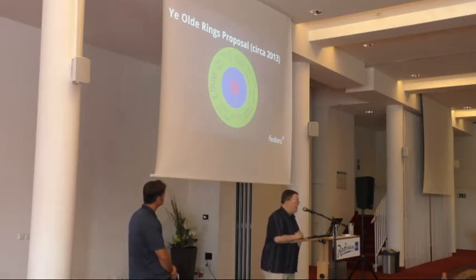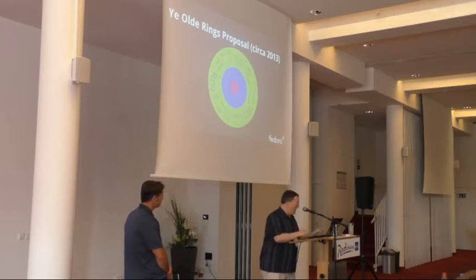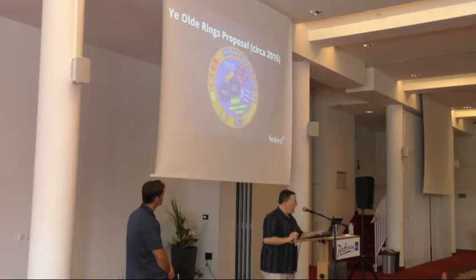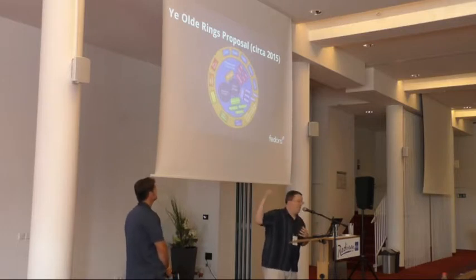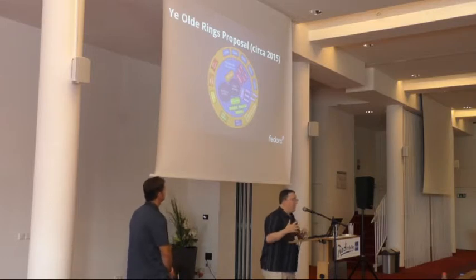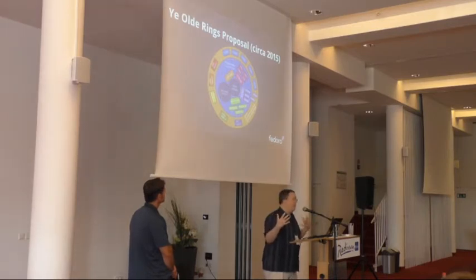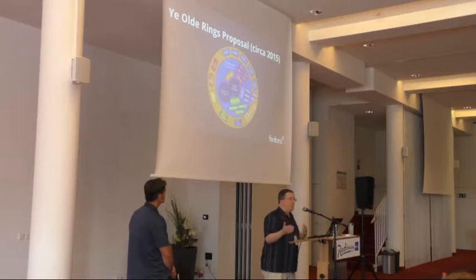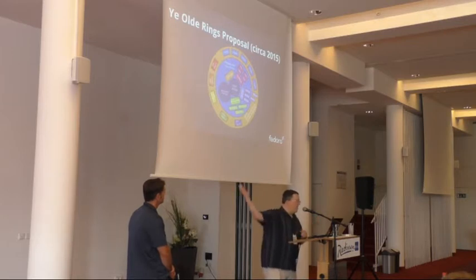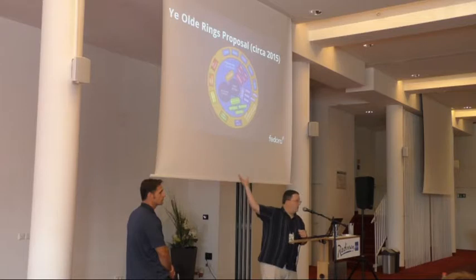Right here on screen you're going to see the old rings proposal, circa 2013. I realized I had missed the revision of this diagram. It's roughly the same — the idea is the same — really about having several different regions that we treat differently in policy. Rather than thinking about this on a purely policy standpoint, this talk is more about thinking about them in terms of what their lifecycle looks like.